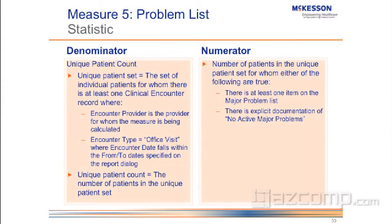Here's the denominator. This is talking about your unique patient count that has at least one clinical encounter in that time period. It's done by provider, and it covers office visits that fall between the to and from date. The unique patient count is the number of unique patients seen in that time period.